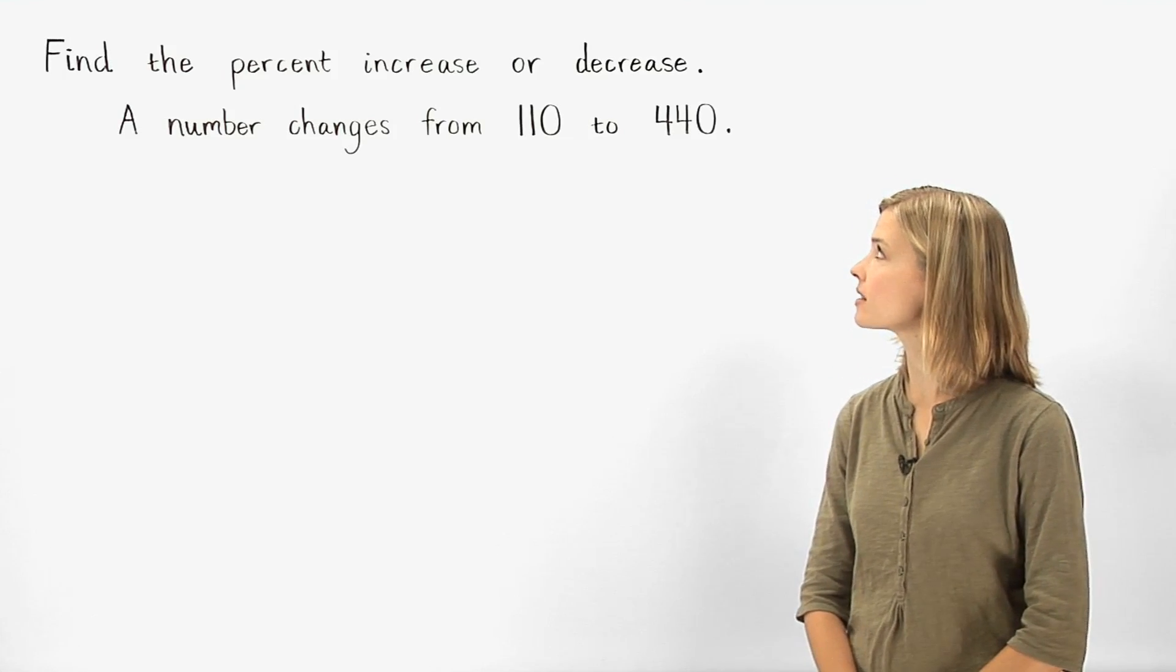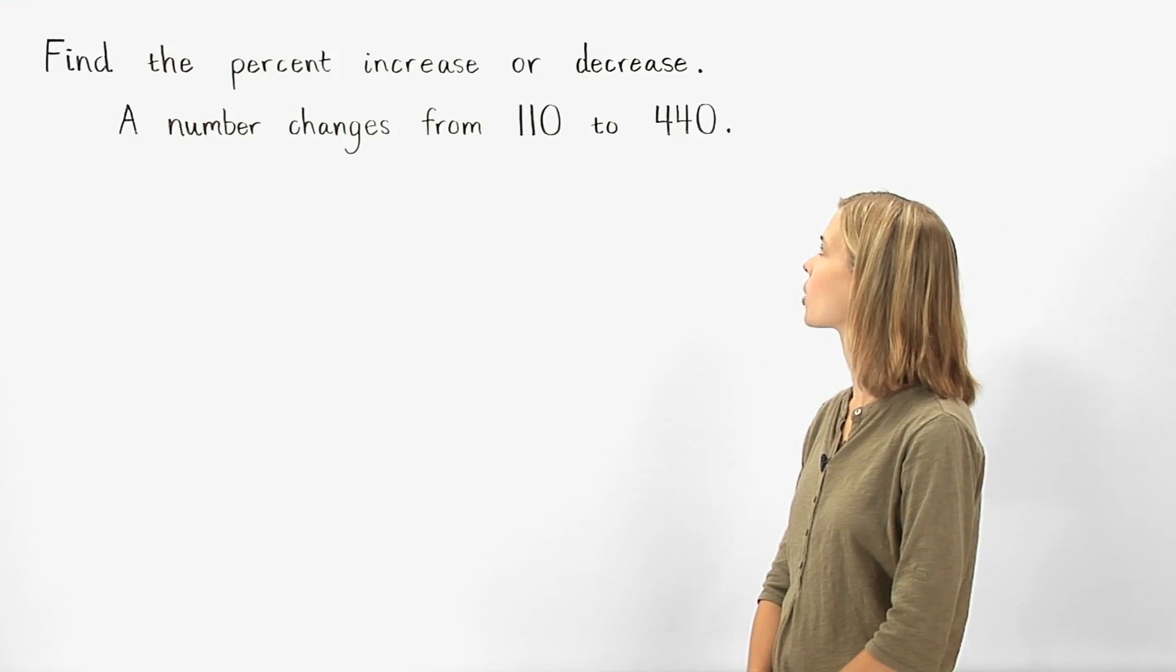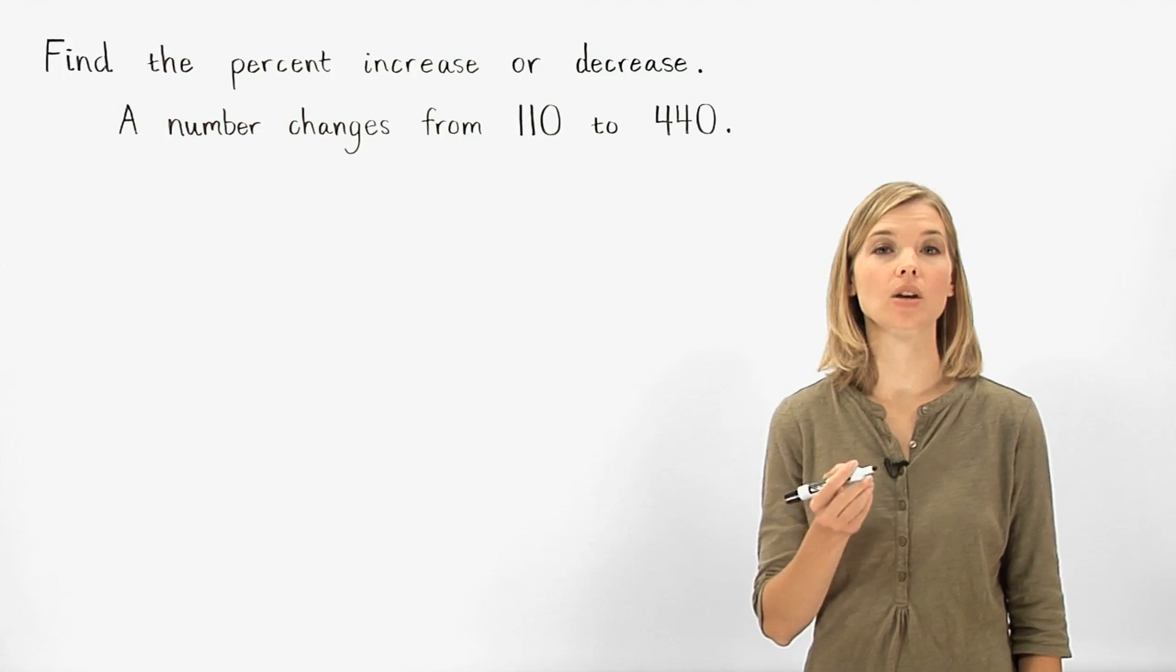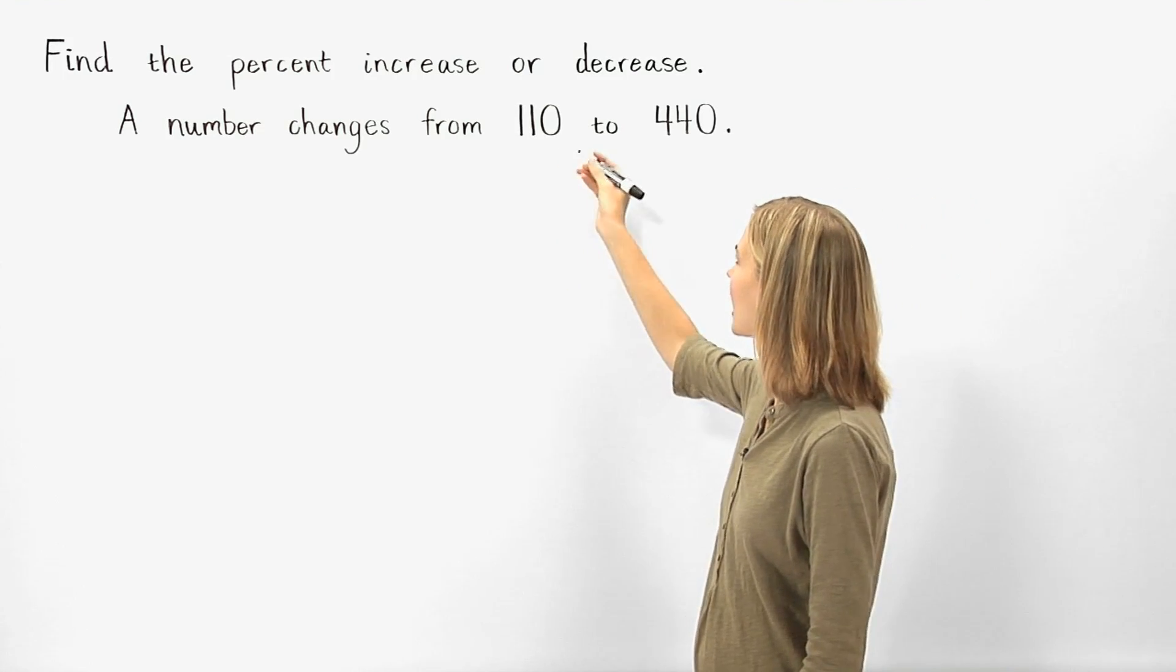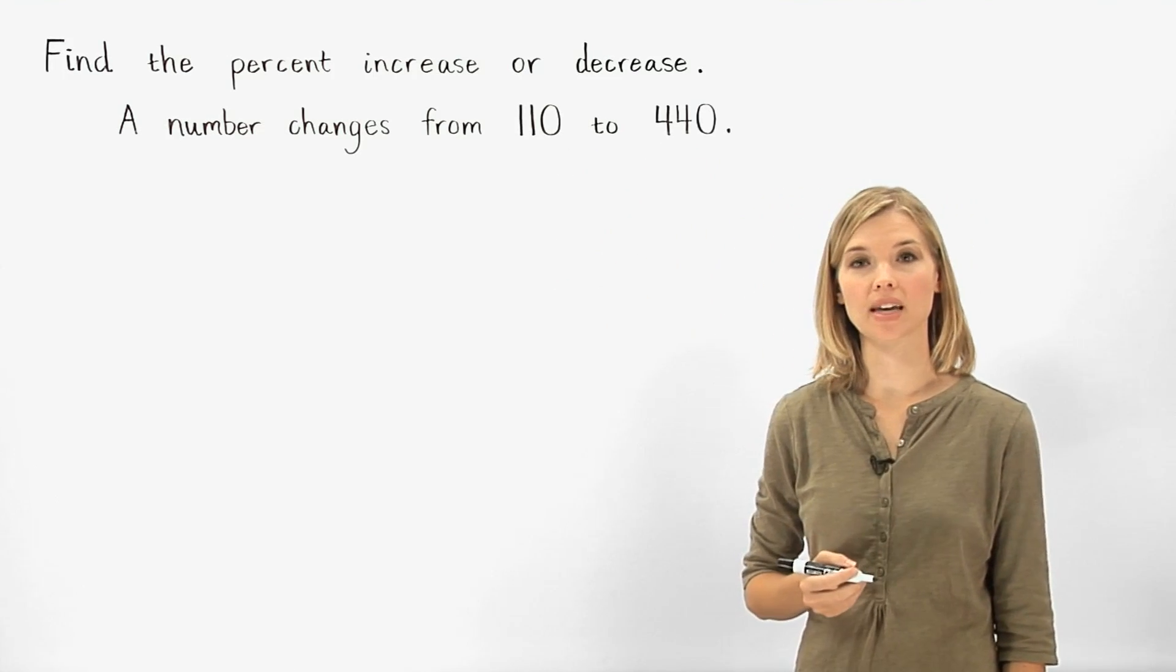To find the percent increase or decrease when a number changes from 110 to 440, first determine whether the number is increasing or decreasing. Since the number changes from 110 to 440, it's going up, so it's increasing.